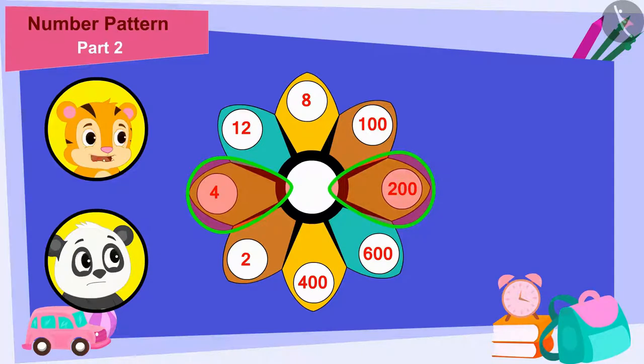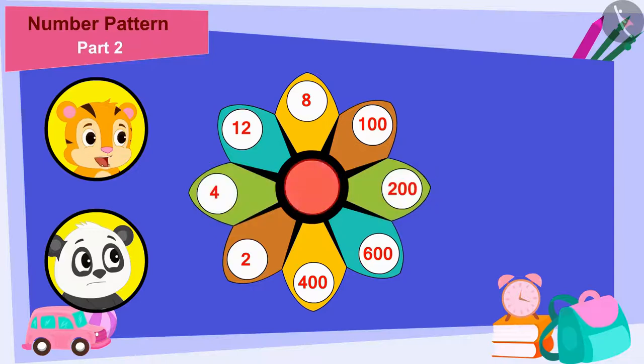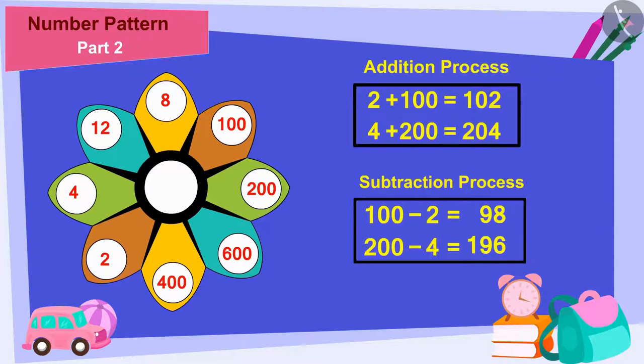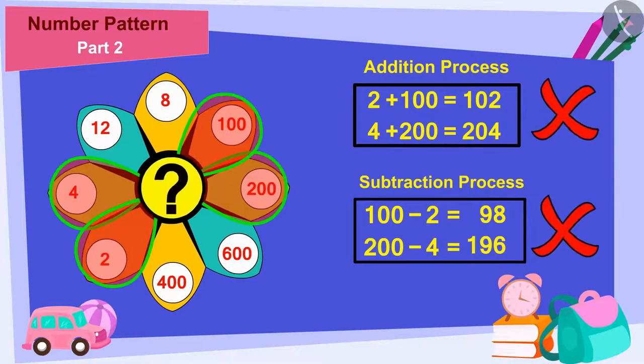'And the blank space is common between these two lines. If we use the addition and subtraction process, we cannot find any number that can be written in the common blank space of these two lines.'